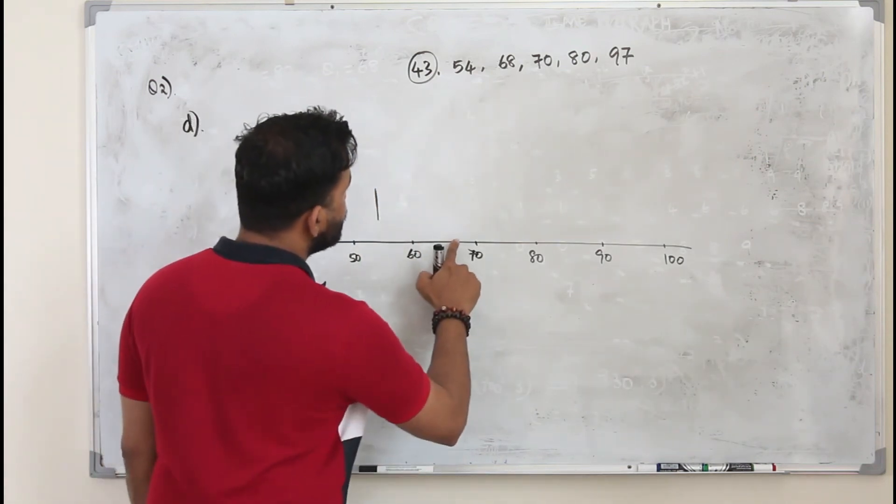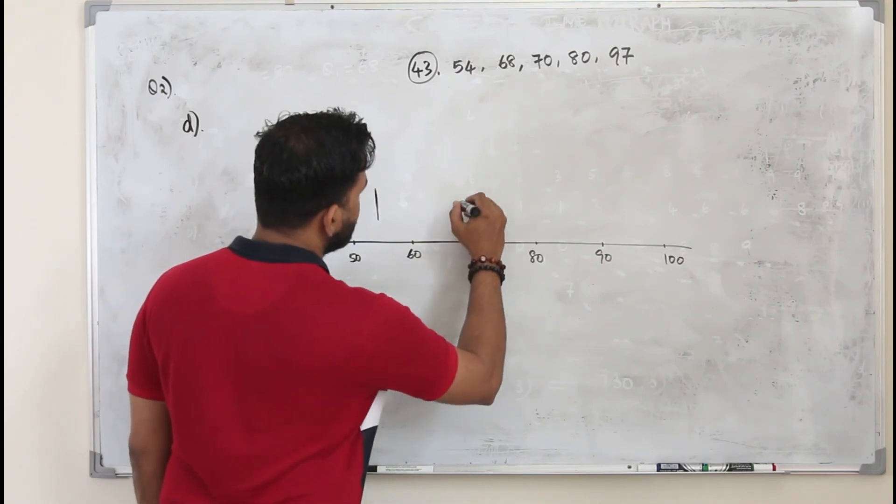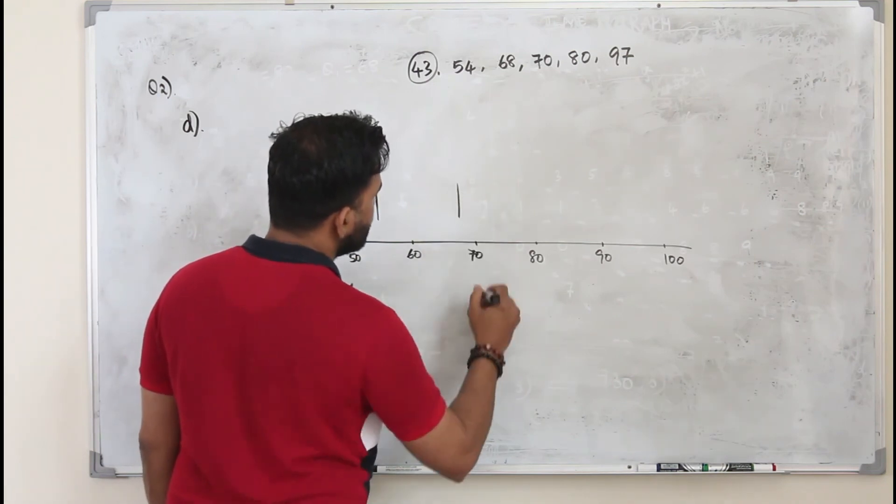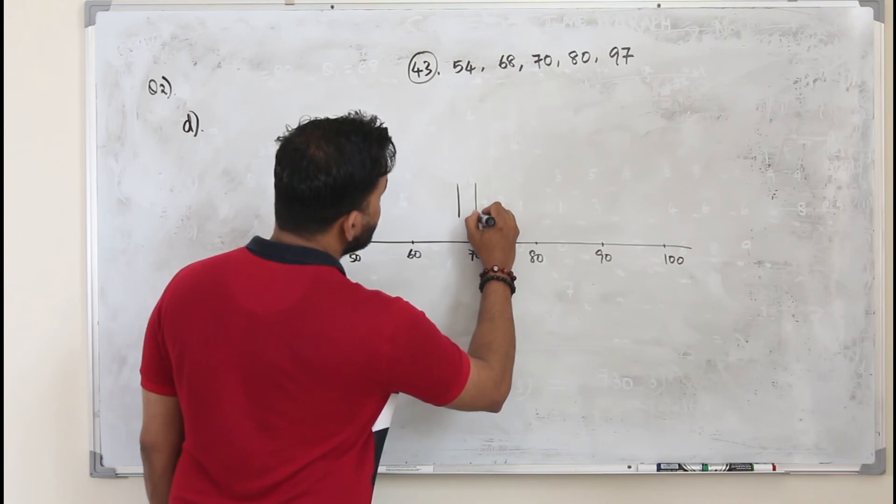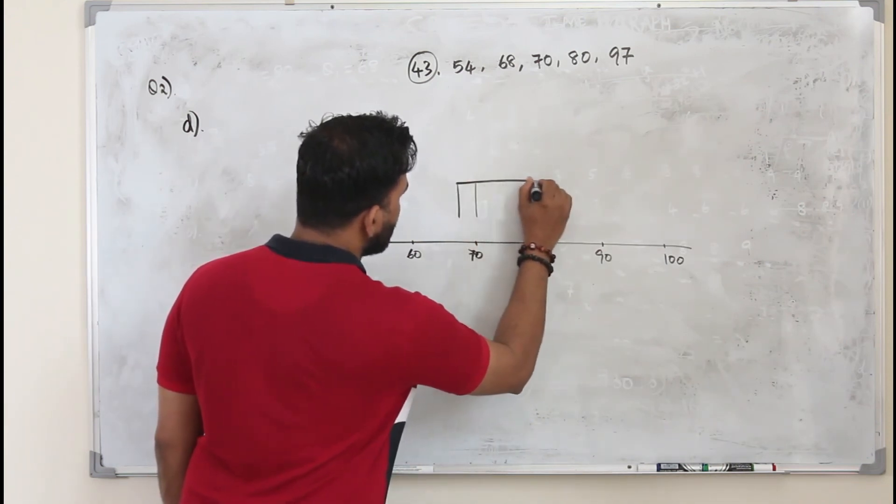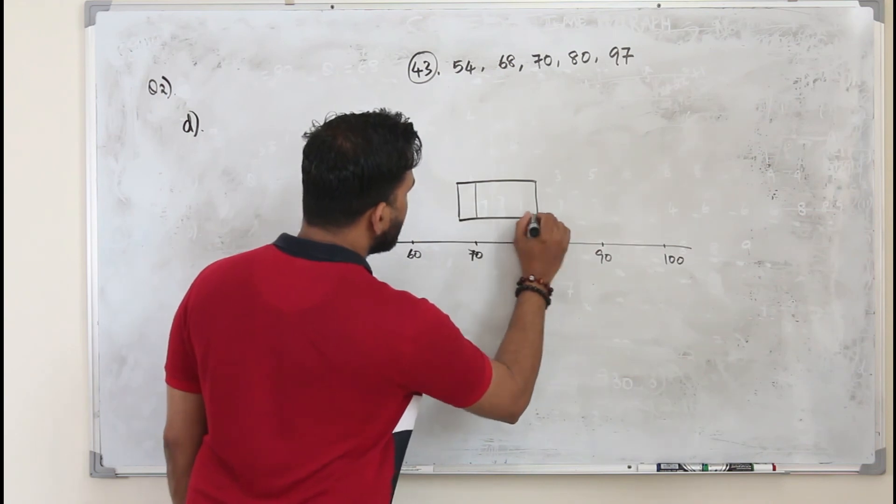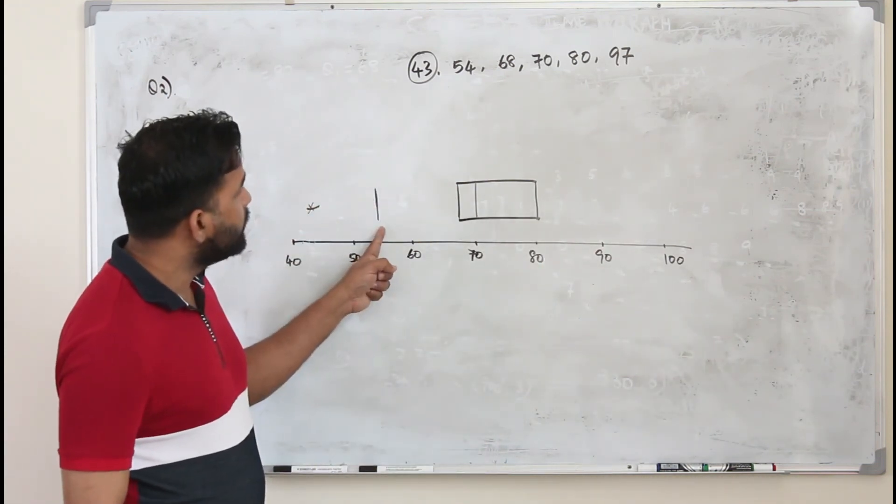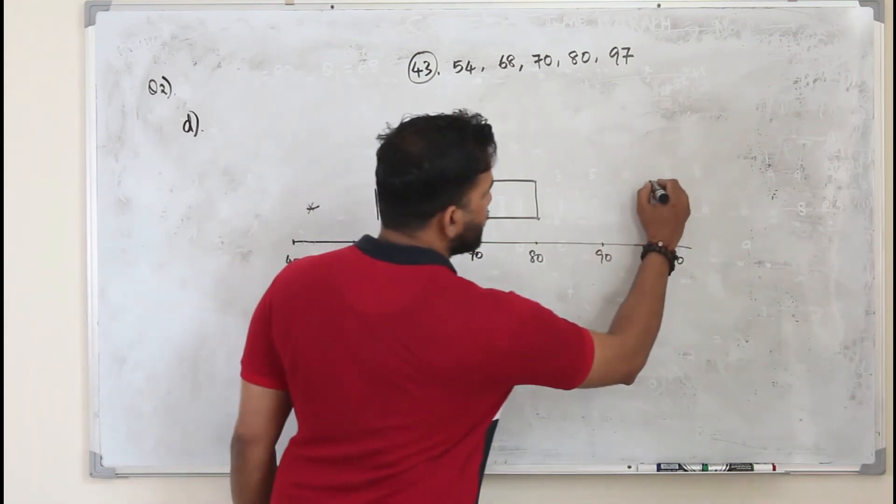And your lowest value is 54 here. And your 68 is the lower quartile. 70 is the median. 80 is the upper quartile. Draw a box joining the lower quartile and upper quartile. And this is the lowest value.